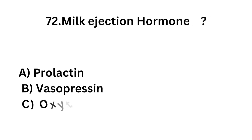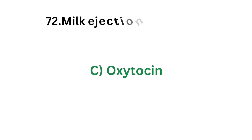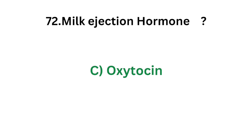Question number 72. Which is the milk ejection hormone? Option A - Prolactin; Option B - Vasopressin; Option C - Oxytocin; Option D - Estrogen. The correct answer is Option C, Oxytocin. Oxytocin is the milk ejection hormone.